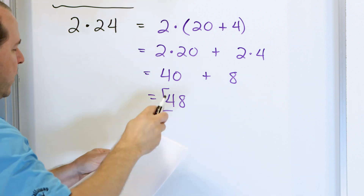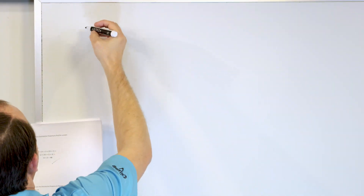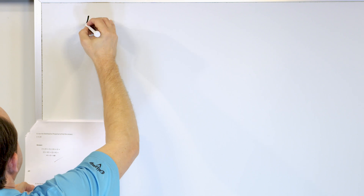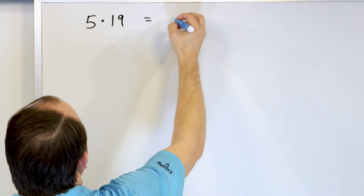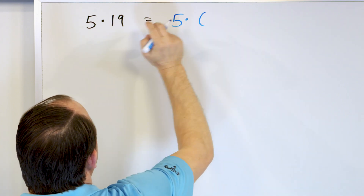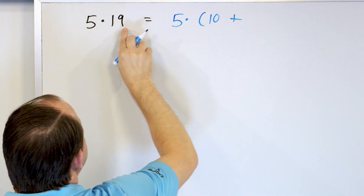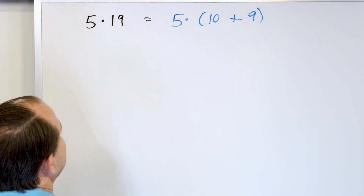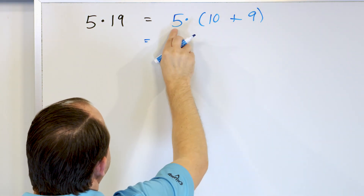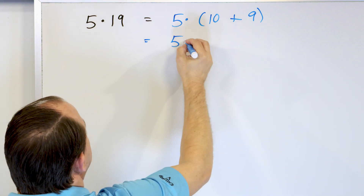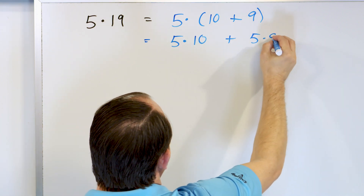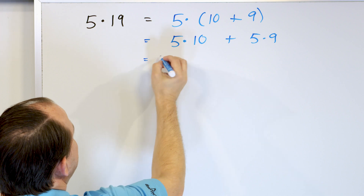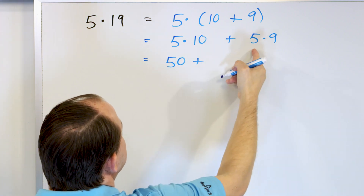We're going to do one more where we write it all out first, and then after that we're going to stop writing it out and try to calculate it in our mind first. 5 times 19. I don't want you to think about it as 5 times 19. I want you to think about it as: 5 times — this 1 really represents a 10, and then this 9, of course, represents a 9. This is what I want you to think about it representing. The distributive property means it's 5 times 10, the plus sign comes from the inside, and then it's 5 times 9. The 5 times 10 is 50, and then the 5 times 9 is 45.